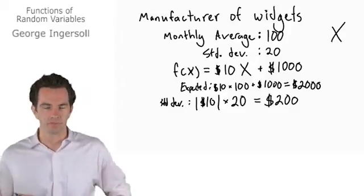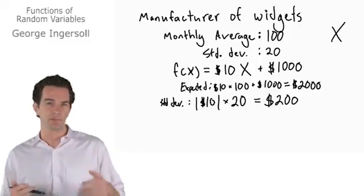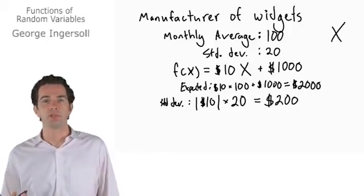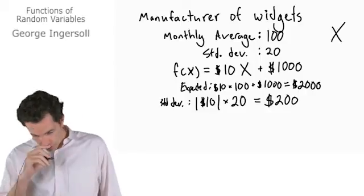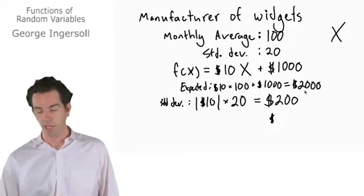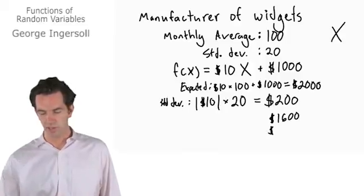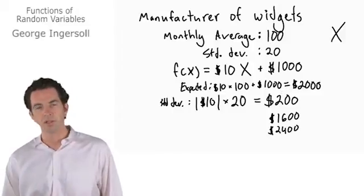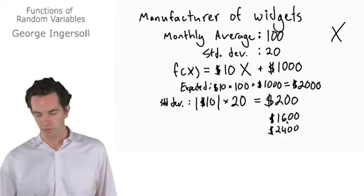Therefore, we can start making claims about this. Because we know the average and the standard deviation, and because we know things about a normal distribution, we can say 95% of the time we're going to be within two standard deviations of the mean. So 95% of the time, our factory costs are going to be between $2,000 minus two standard deviations — that's $1,600 — and $2,000 plus two standard deviations — that's $2,400.